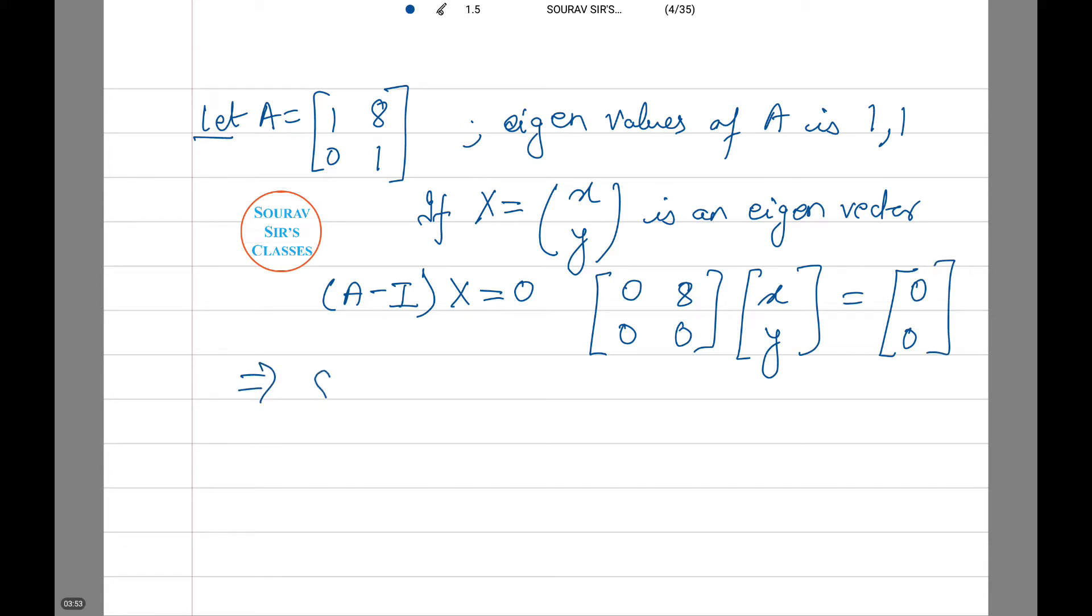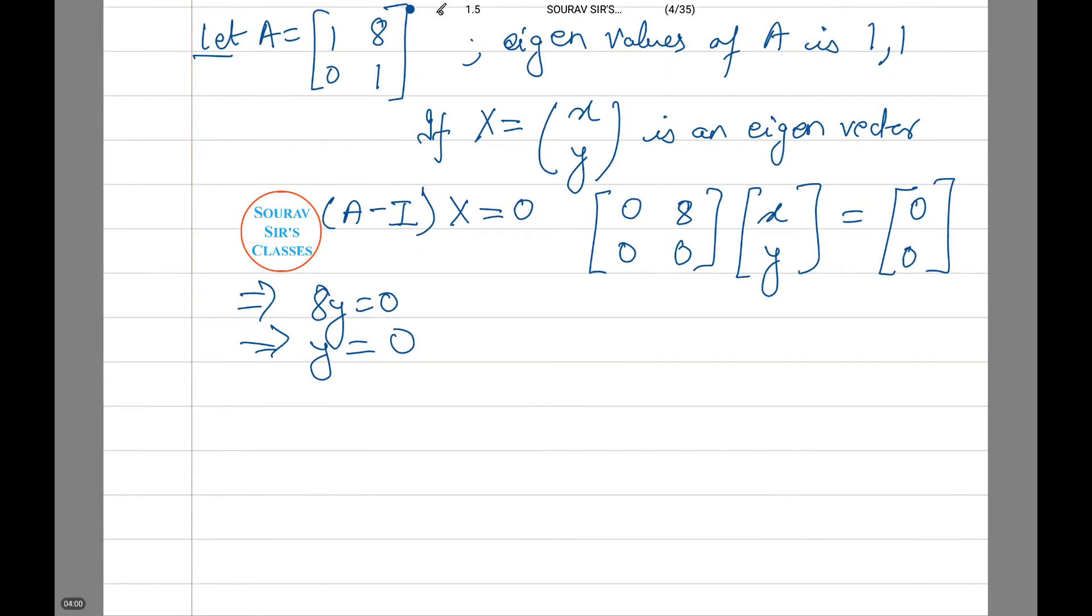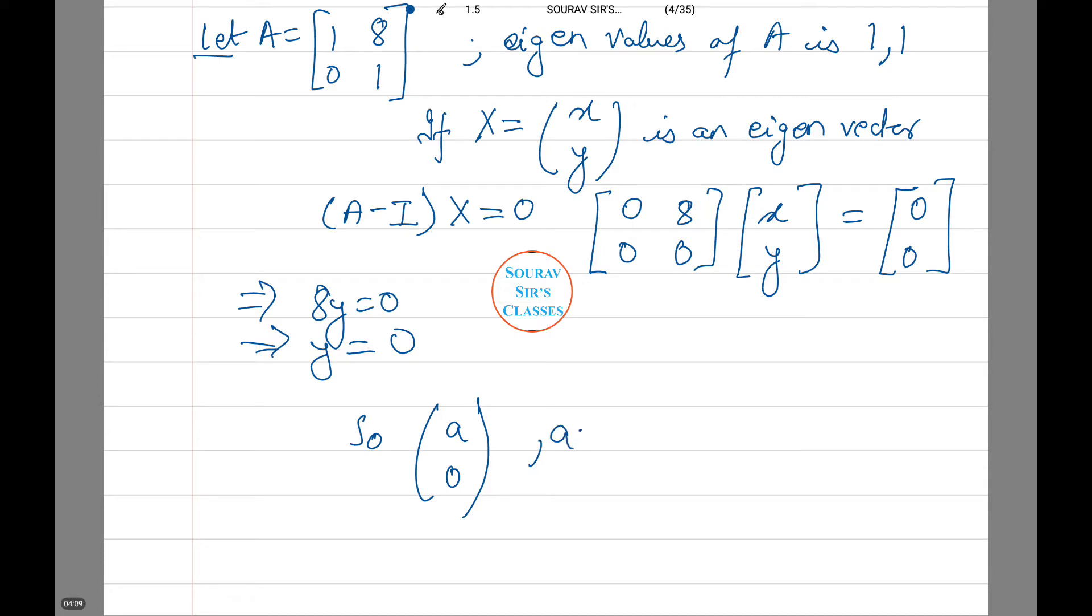Now, equating, we find 8y equals 0. Thus, the value of y equals 0. Therefore, A is [a, 0] where a is not equal to 0, which is an eigenvector.